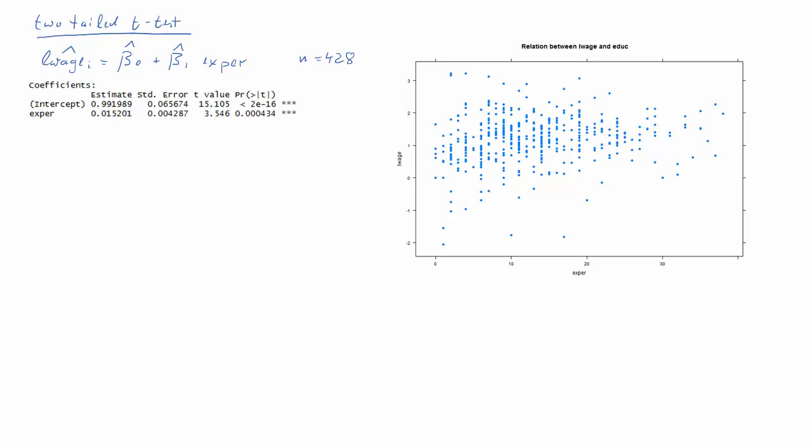So let's do a two-tailed t-test. Here we have a simple regression model where we have regressed log wage on years of experience. Here's a little scatter plot of our data.